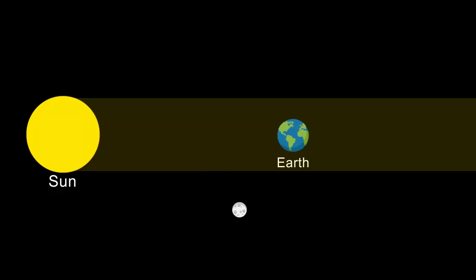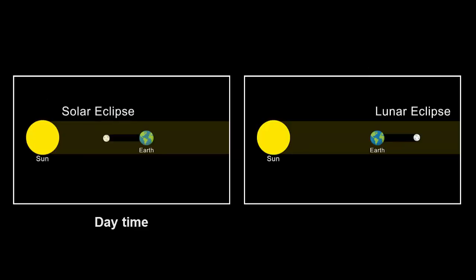When it comes to a lunar eclipse, the earth blocks the sunlight for the moon. That means the earth has to be in between the sun and the moon. A solar eclipse occurs during daytime and a lunar eclipse occurs during nighttime. So this is what the eclipse is all about.